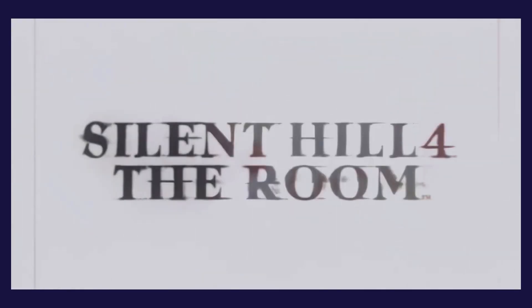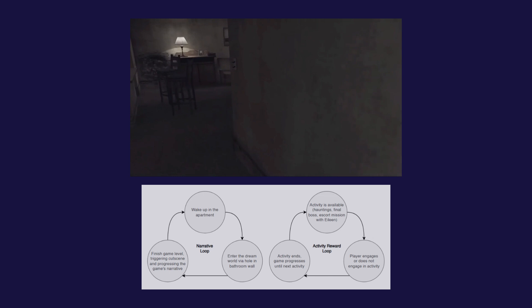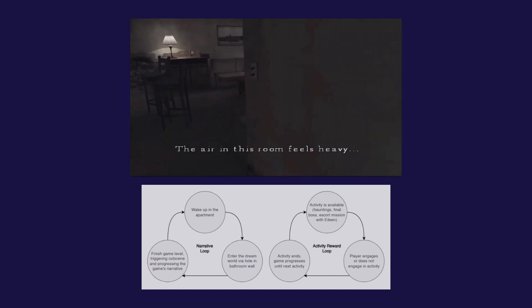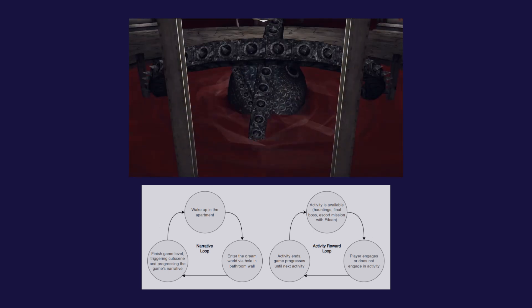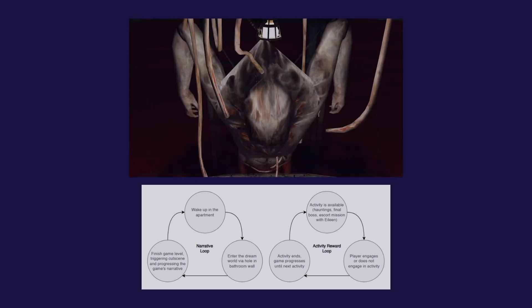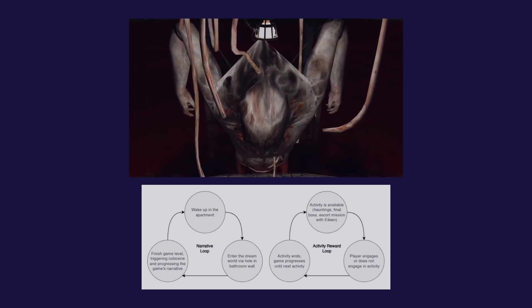Lastly, Silent Hill 4: The Room opts for much slower, drudging gameplay on top of its combat and exploration loops. Locking the player in a dreamlike world with uncanny area layouts, sluggish combat, and switching from third-person to first-person perspectives when entering the game's titular room. The narrative progression and activities engaged with throughout the game act as an example of Silent Hill 4's tertiary game loops. Ultimately, the activity reward loop directly influences the final narrative outcome, providing the player with one of four endings based on how they chose to act.